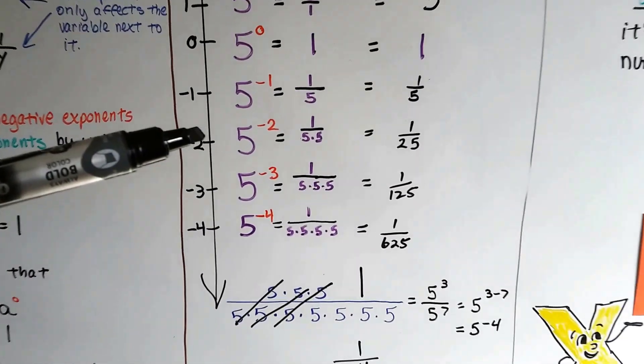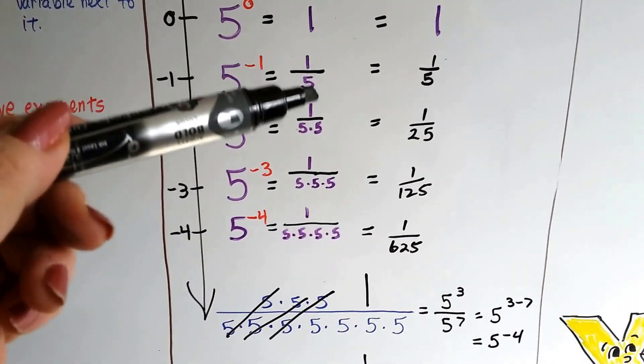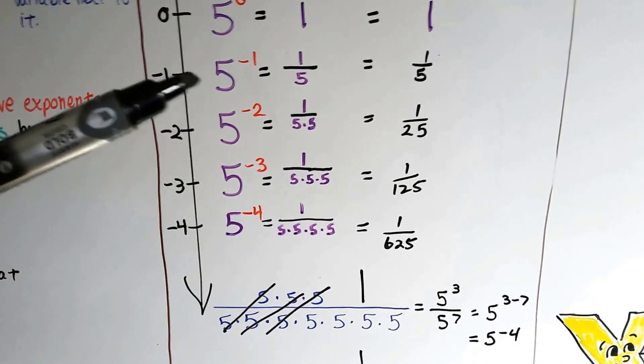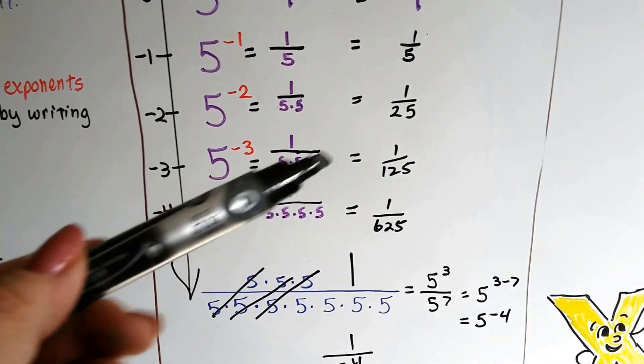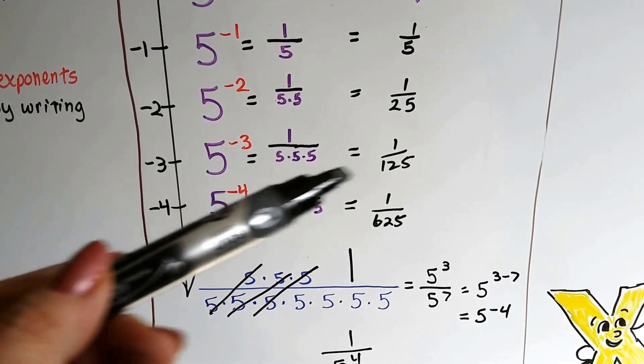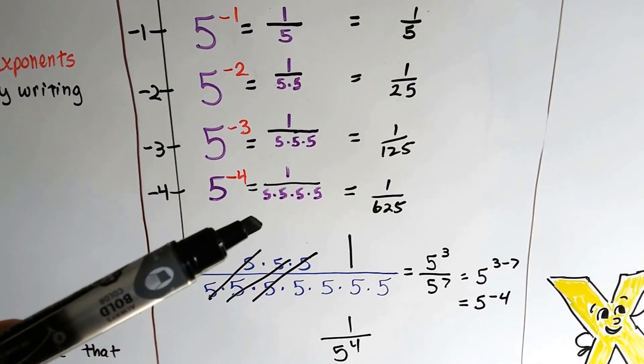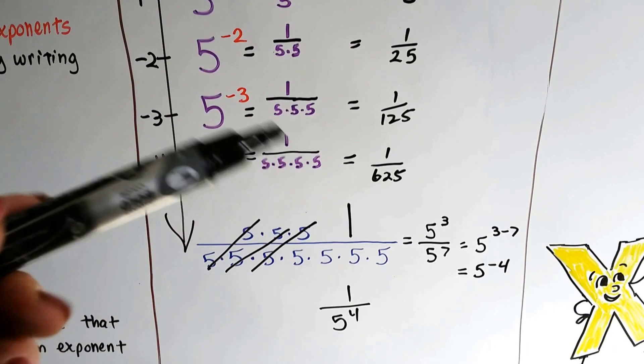And for the negative exponents, 5 to the negative 1 is 1 fifth. It's a fraction. And 5 to the negative 2 is 1 over 5 times 5 as 1 25th, 1 over 100 and 125, and it just keeps going.